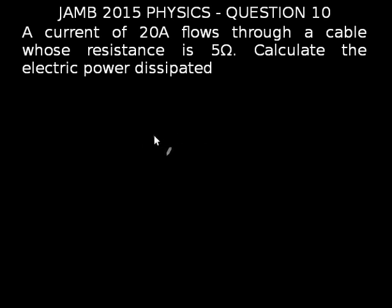Let us look at the JAMB 2015 physics exams, question number 10. A current of 20 amperes flows through a cable whose resistance is 5 ohms. Calculate the electric power dissipated.